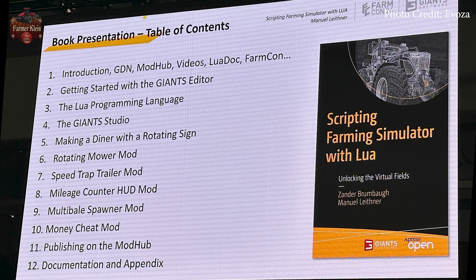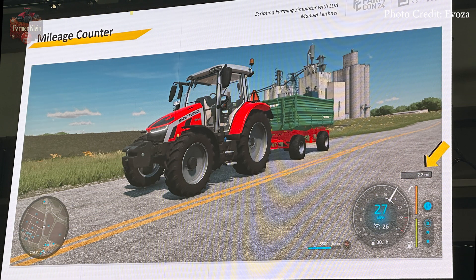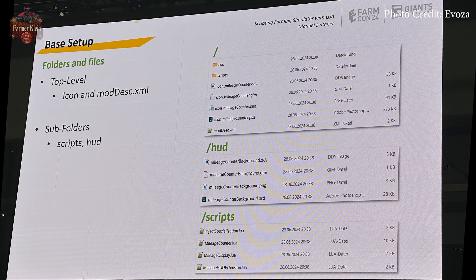The book is structured with an introduction to the Giants Developer Network, mod hub videos, and other information, a section on getting started with the Giants Editor, the Lua programming language, and Giants Studio. There are several sample mods including a diner, a mower, a speed trap, a trailer mileage counter, multiple bale spawner, and a money cheat, as well as how to publish your mod to the mod hub, plus further documentation and appendices. This presentation focuses on section 8 of the book — the mileage counter mod.